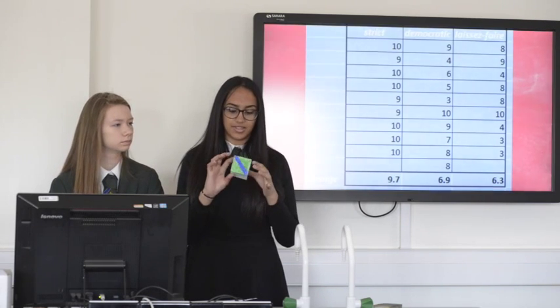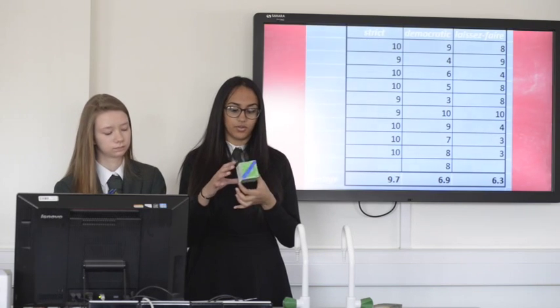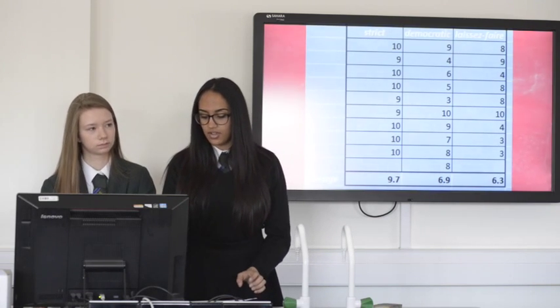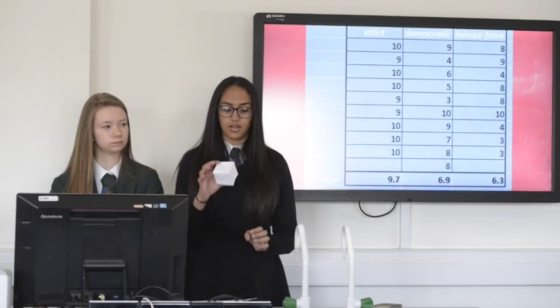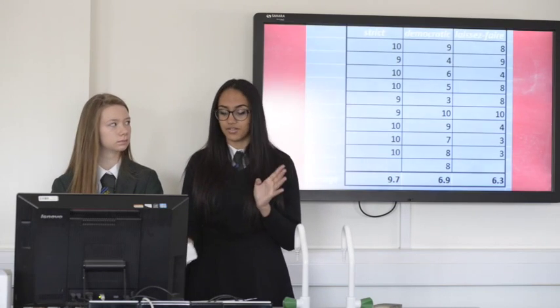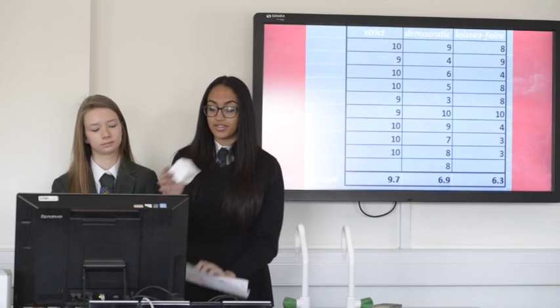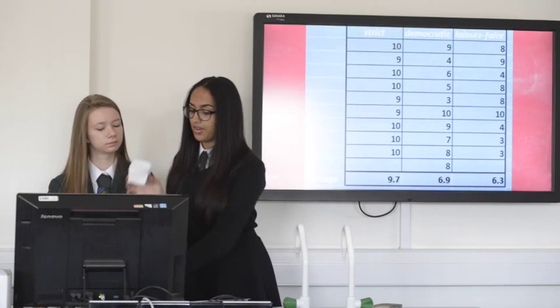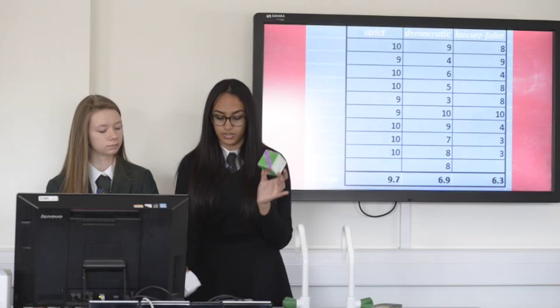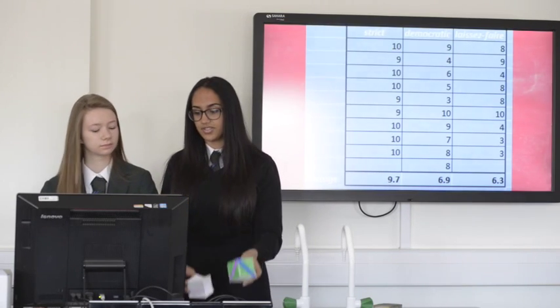This is from the strict group — you can see it's well formed, it's been cut out, folded, and cleaned correctly. You also get two points for cutting it out properly and sticking it together, making four points total, with an overall score out of ten. This is from our laissez-faire group, this is from our democratic group, and this is from our strict group. You can clearly see there is a difference between the development of the boxes.